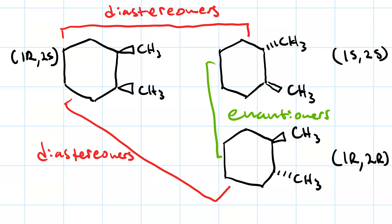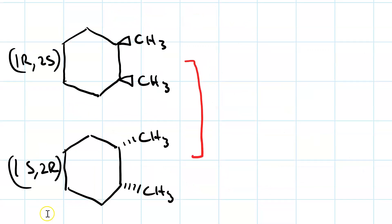Does that mean that if we made 1S2R, it would be the enantiomer of the 1R2S? Let's try it. So, here's the 1S2R. We've inverted both chirality centers.